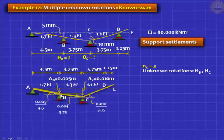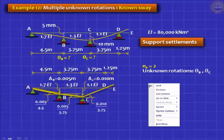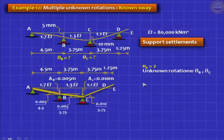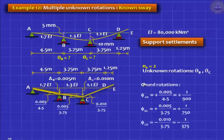So you can assume hinges here to get these straight lines. And as far as this is concerned, it is an anti-clockwise chord rotation because this support D is not settled, only C has settled. So it is 10 mm divided by span of 3.75 meter.